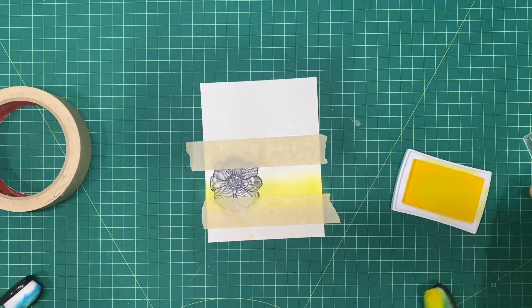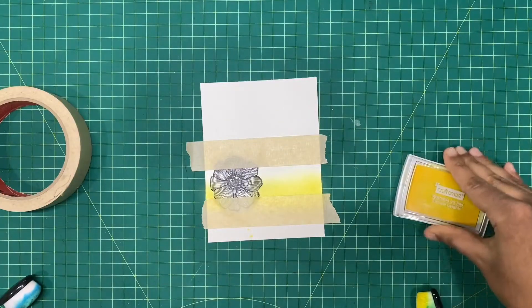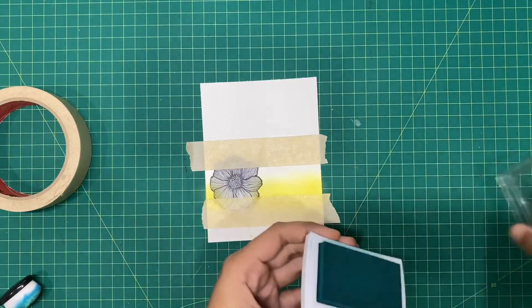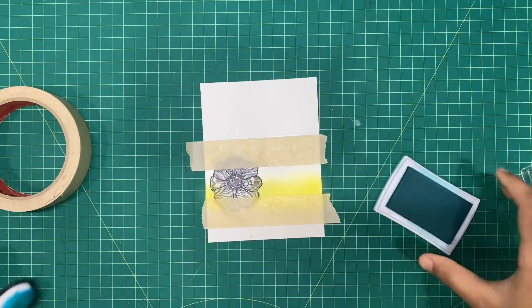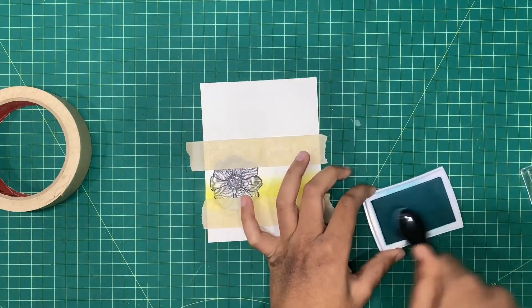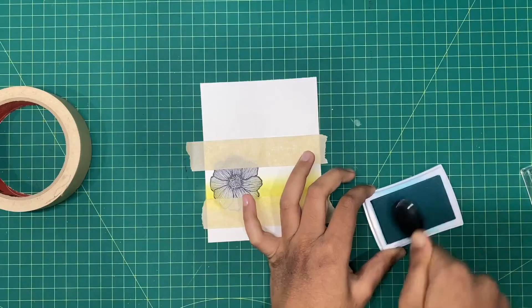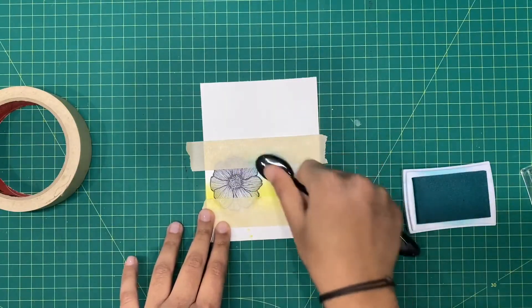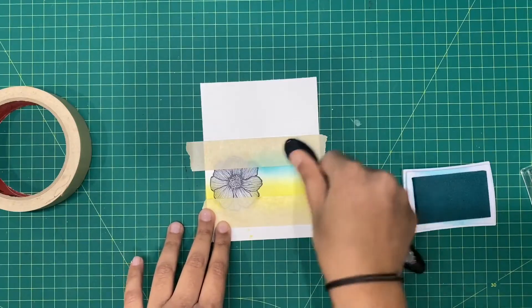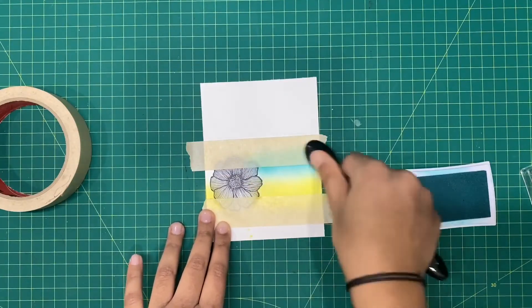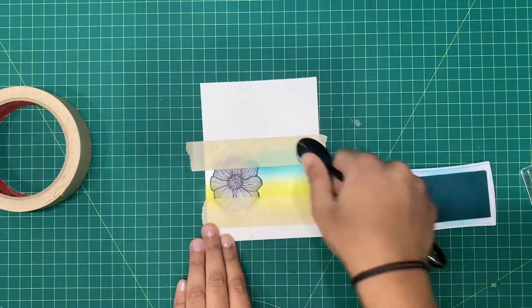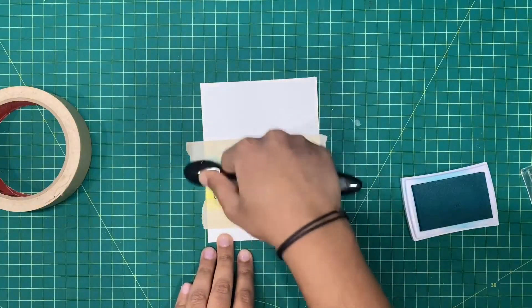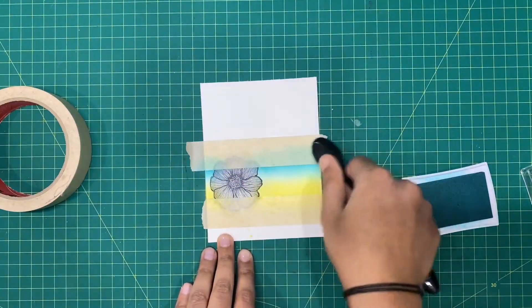Once I'm done with my yellow, I'm going to close my ink pad and start with the green. I'm going to apply the ink on my brush. I'm going to start putting it on the cardstock in circular motion.